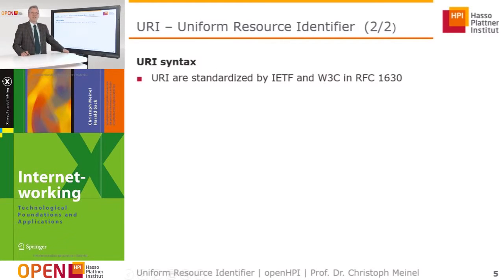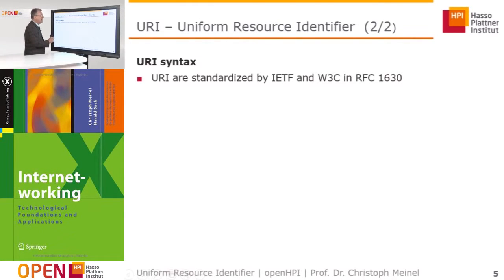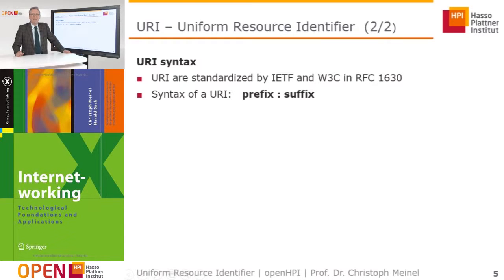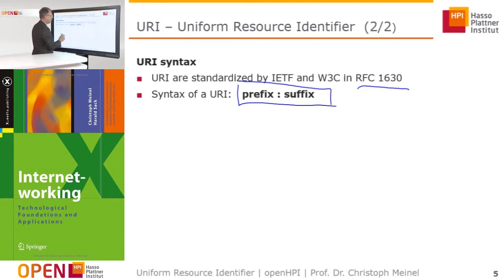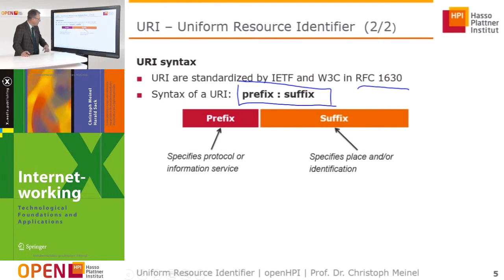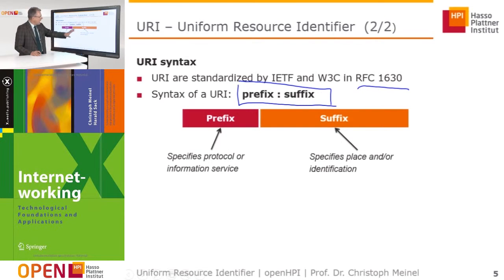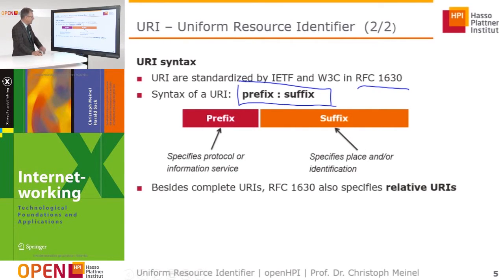Now let's consider the syntax of the URI — the Uniform Resource Identifier — used to identify resources of the World Wide Web. URIs are standardized by the Internet Engineering Task Force and by the Web Consortium, described in RFC 1630. The syntax of such a URI looks as follows: there is a prefix, then a colon, and then a suffix. In the prefix, the protocol or the information service is specified over which the resource can be accessed. In the suffix, the place or the identification where the resource can be found is specified.